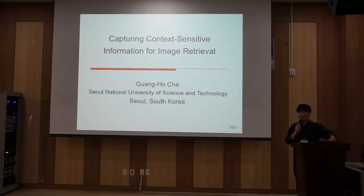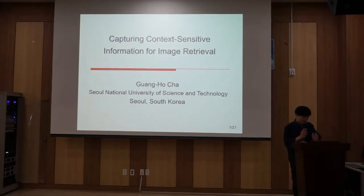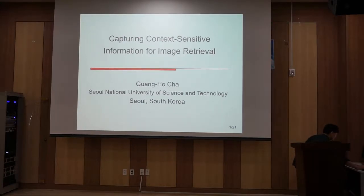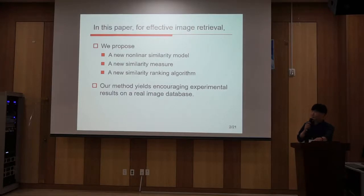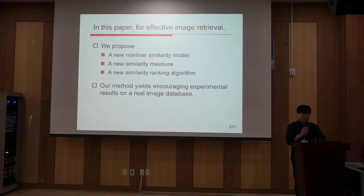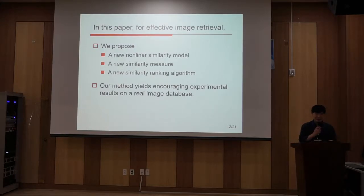In this presentation, I'd like to cover the issue of capturing context-sensitive information for image retrieval. In this paper, for effective image retrieval, we propose a new non-linear similarity model, a new similarity measure, and a new similarity ranking algorithm.